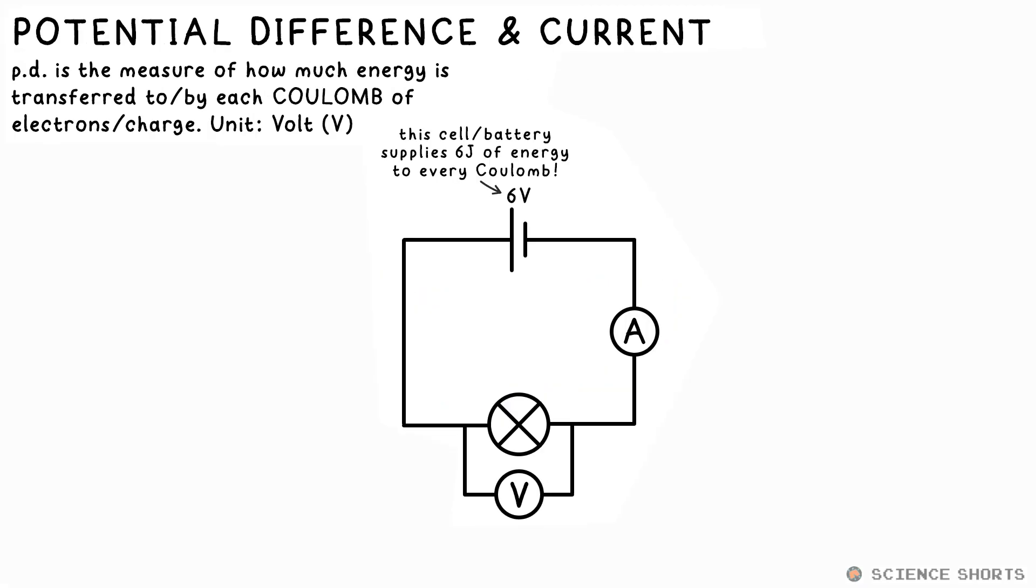Potential difference, PD for short, also known as voltage, tells us how much energy is transferred per coulomb of electrons. So if a cell or battery says it's one volt, that means it's one joule of energy given to every coulomb of electrons that pass through it. If a battery is six volts, that means six joules is supplied per coulomb instead. We measure PD with a voltmeter. They're always connected in parallel across the component you want to measure the voltage of, the PD of.